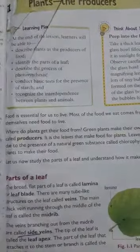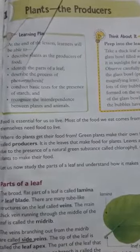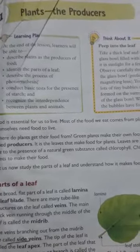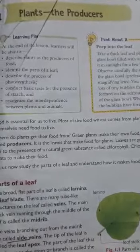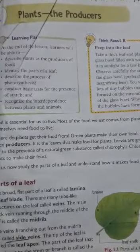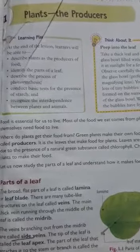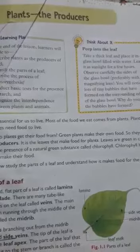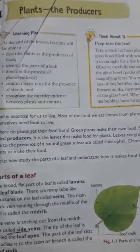As you all know, food is essential for us to live. Most of the food we eat comes from plants. Plants themselves also need food to live since they are living things. Green plants make their own food, so they are called producers.